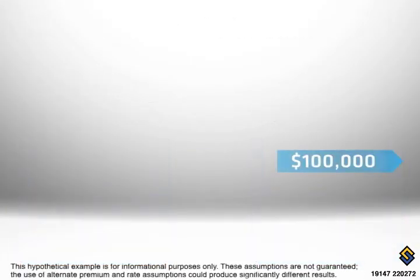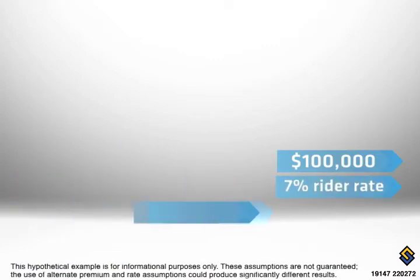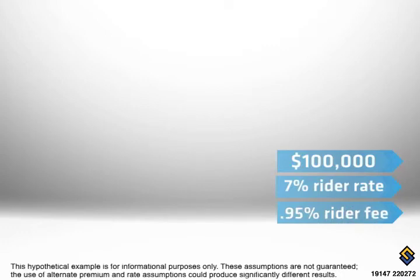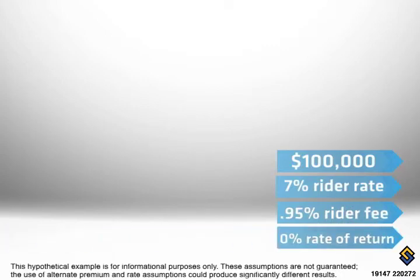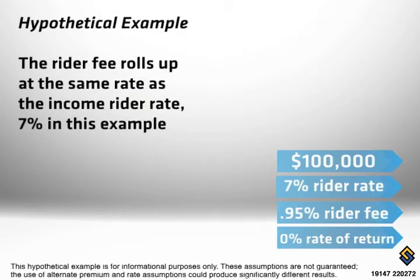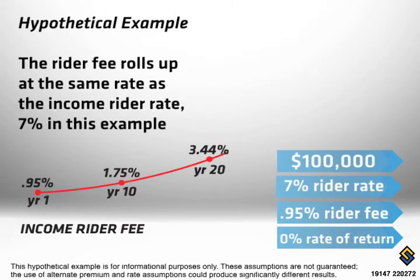For example, let's say we have $100,000, an income rider rate of 7%, a fee of 0.95%, and let's assume a 0% rate of return on the base annuity. The income rider rate amount would compound each year at 7% until the income stream is turned on.